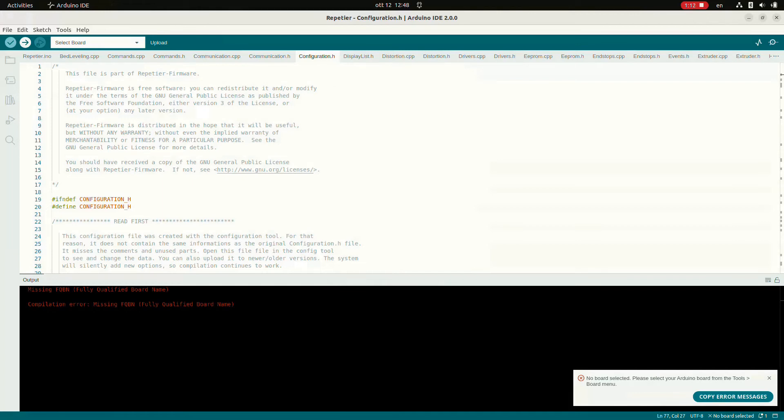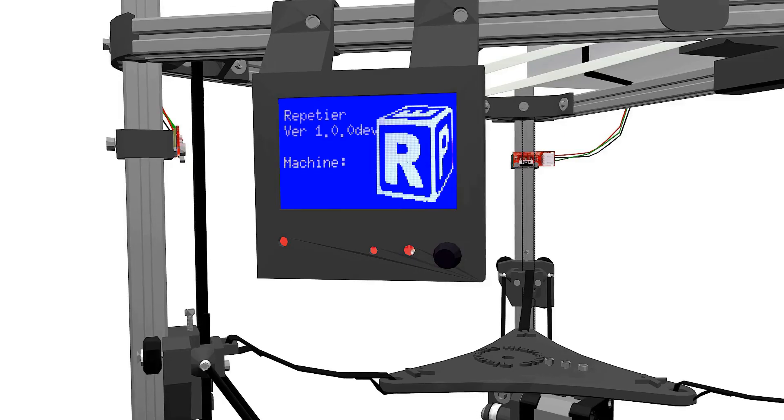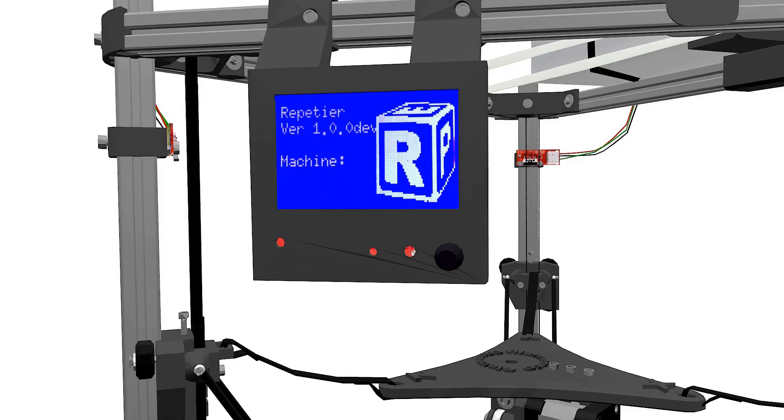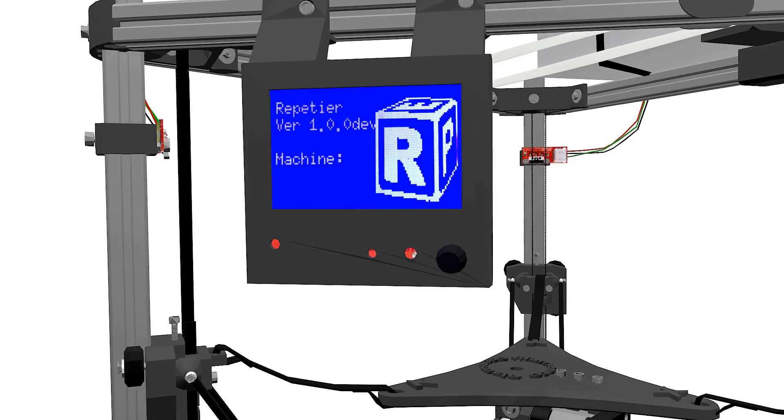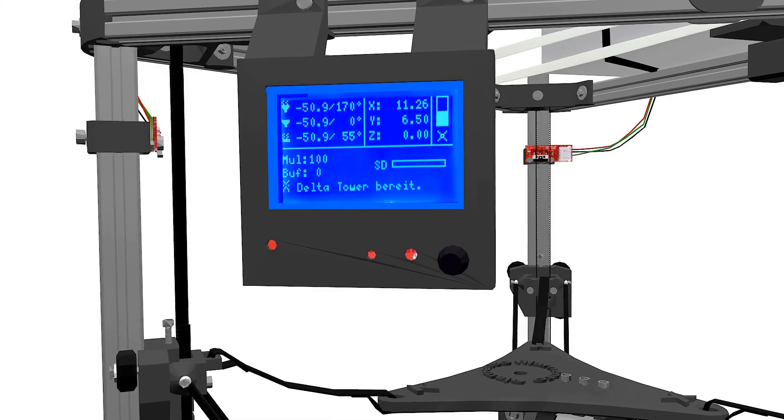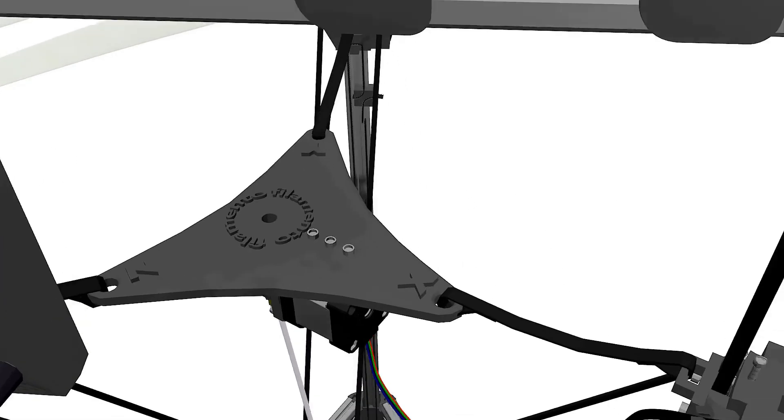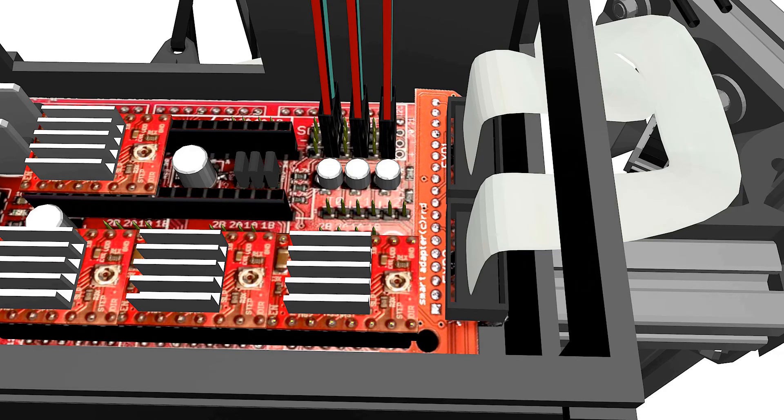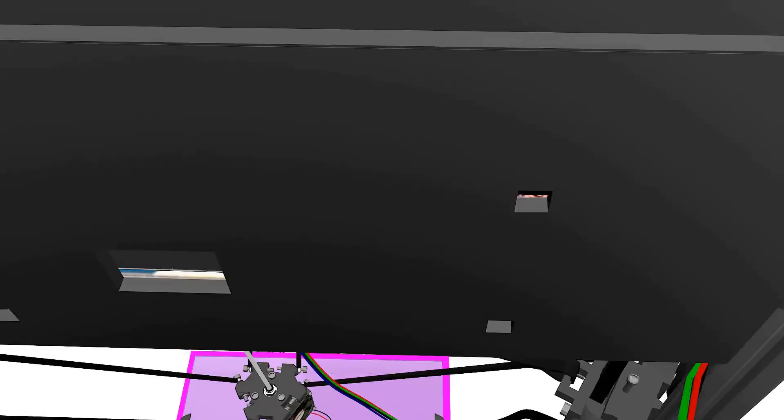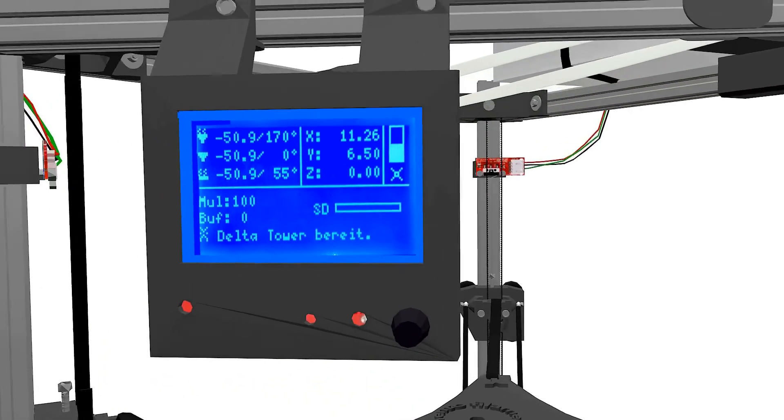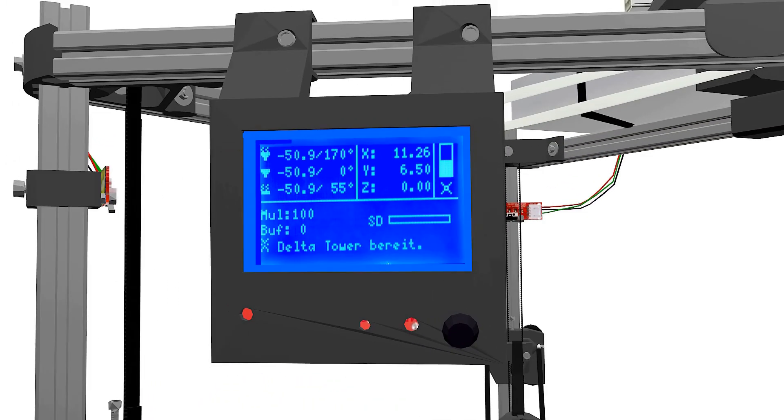When uploading is done, the LCD should now display a splash screen with the Repetier logo and the main control panel. This means we've correctly uploaded the firmware. Should the LCD screen still be black blue after uploading, check the cables going to the RAMPS 1.4 and make sure the EXP1 and EXP2 are connected correctly.